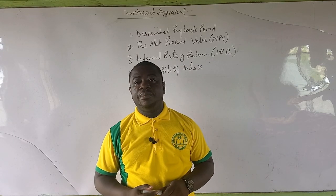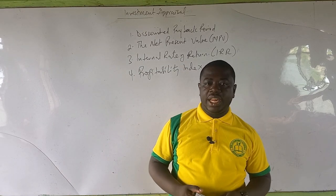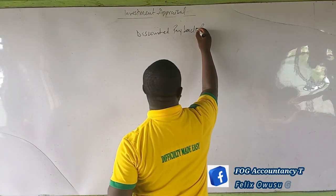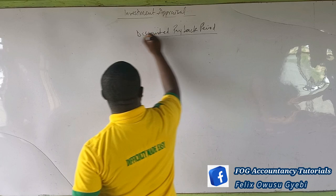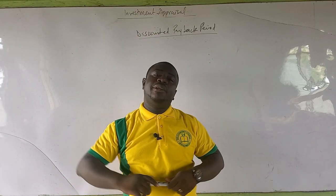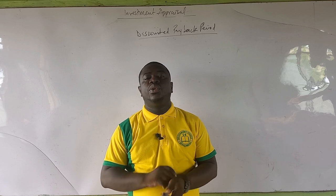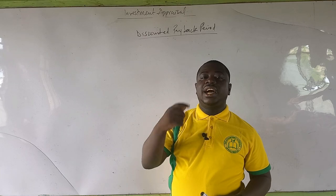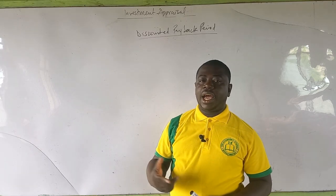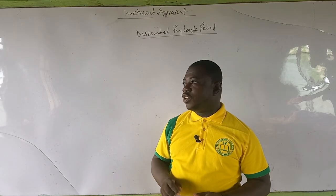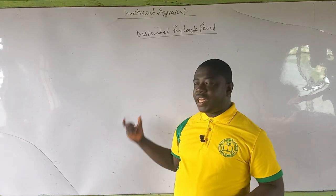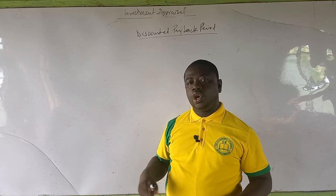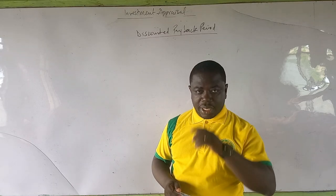We are going to look at the discounted payback period first, and then we will take time to learn the net present value. The discounted payback period is just like the normal payback period, except that the cash flows given in the question are discounted into today's terms using the time value of money approach. After discounting, the new discounted cash flows are used to calculate the payback period.